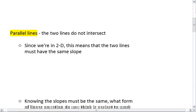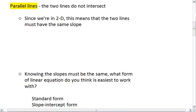The second way that lines can be related is if they are parallel lines. In parallel lines, our definition is that the two lines do not intersect. Since we're in 2D, if we are given a line L,